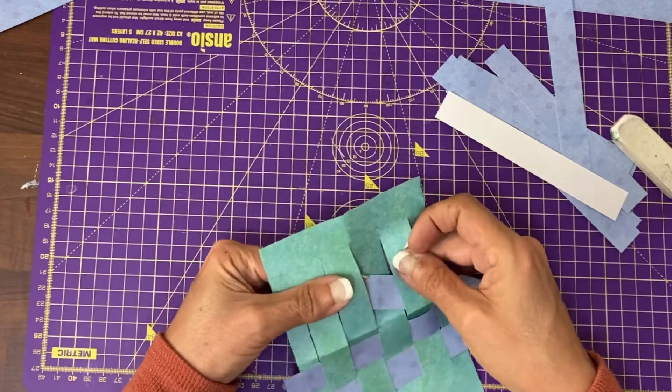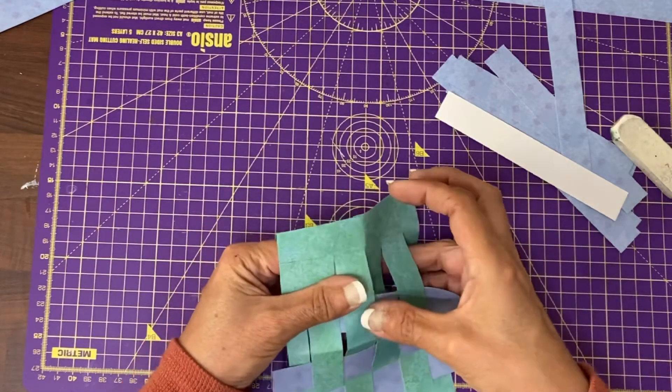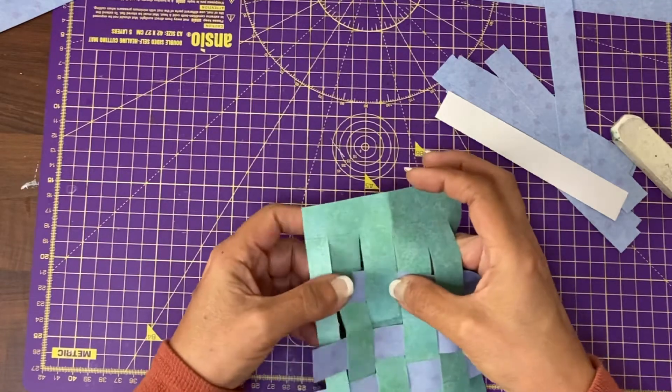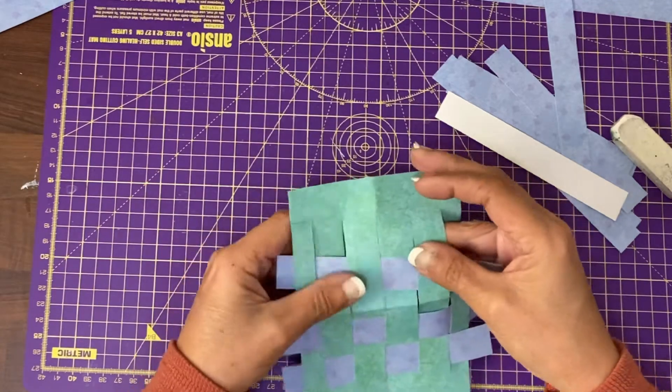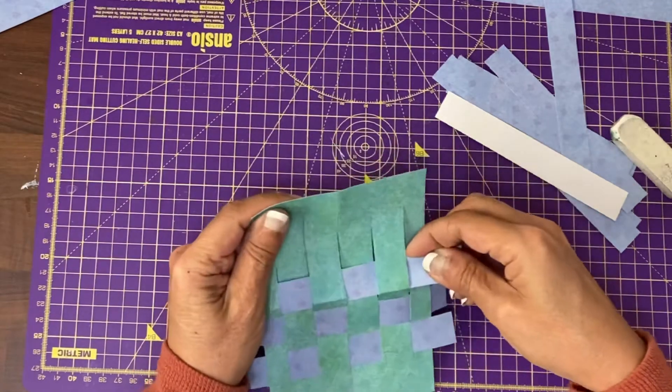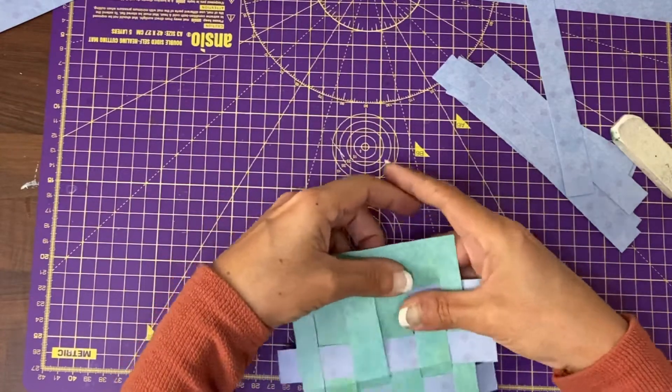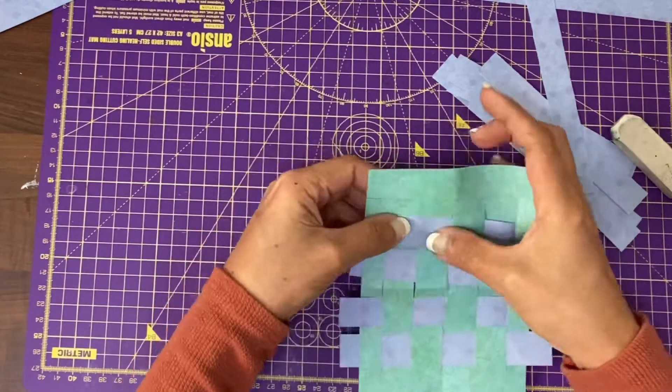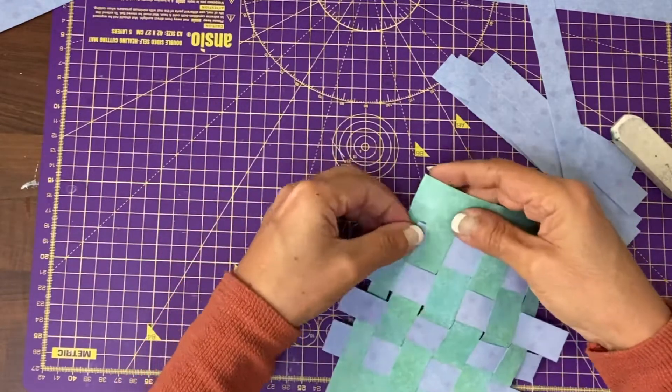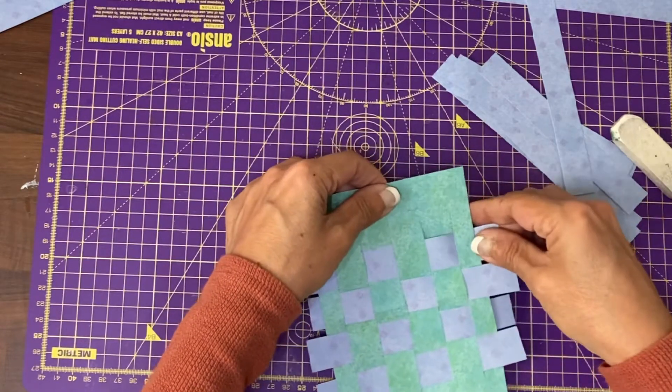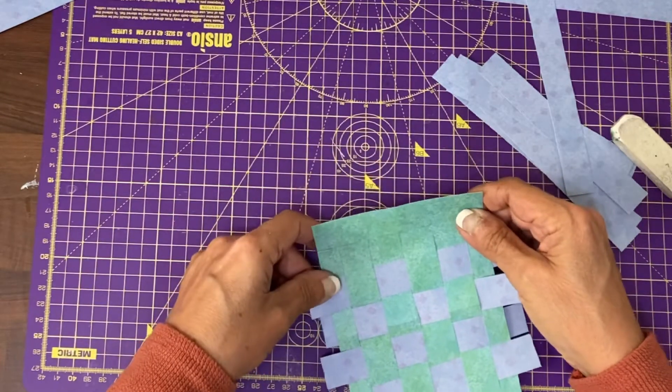So the only time this should cause a difficulty is when you get towards the end and you have less space for the actual weaving. Opposite way, so under, over.